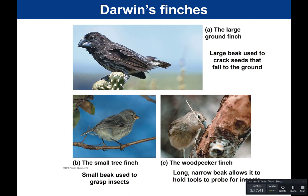Darwin also studied what we call Darwin's finches. He described 14 distinct types of finch, each different from the birds on the mainland yet sharing some features. For example, the large ground finch has a very large beak used to crack seeds; the small tree finch has a small beak used to grasp insects; the woodpecker finch has a long, narrow beak to hold tools and probe for insects. Depending on their different selective pressures, these birds have different beaks to help them get the food they need.